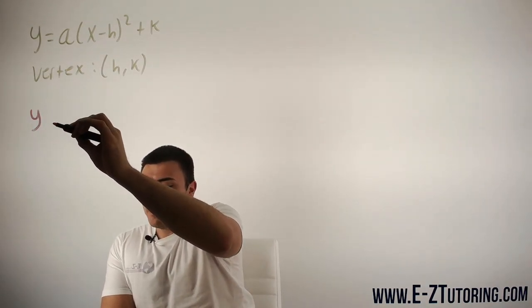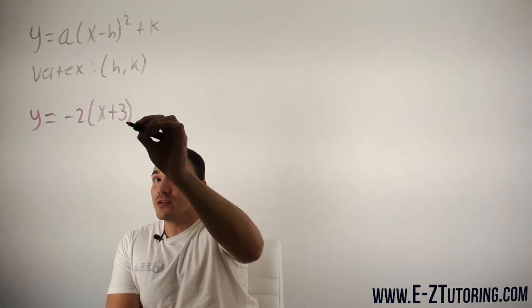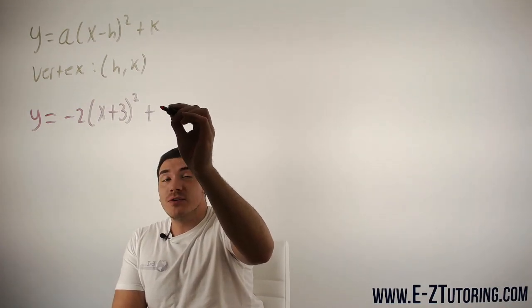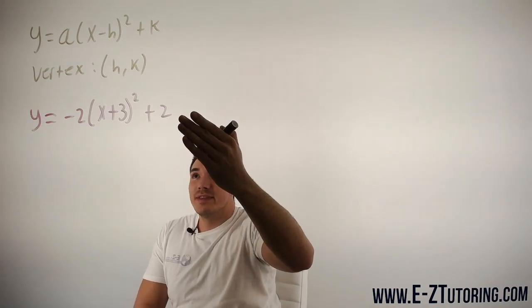So let's suppose we are given y equals negative 2 times x plus 3 squared plus 2. So this is the standard form of vertex form and we're given this.